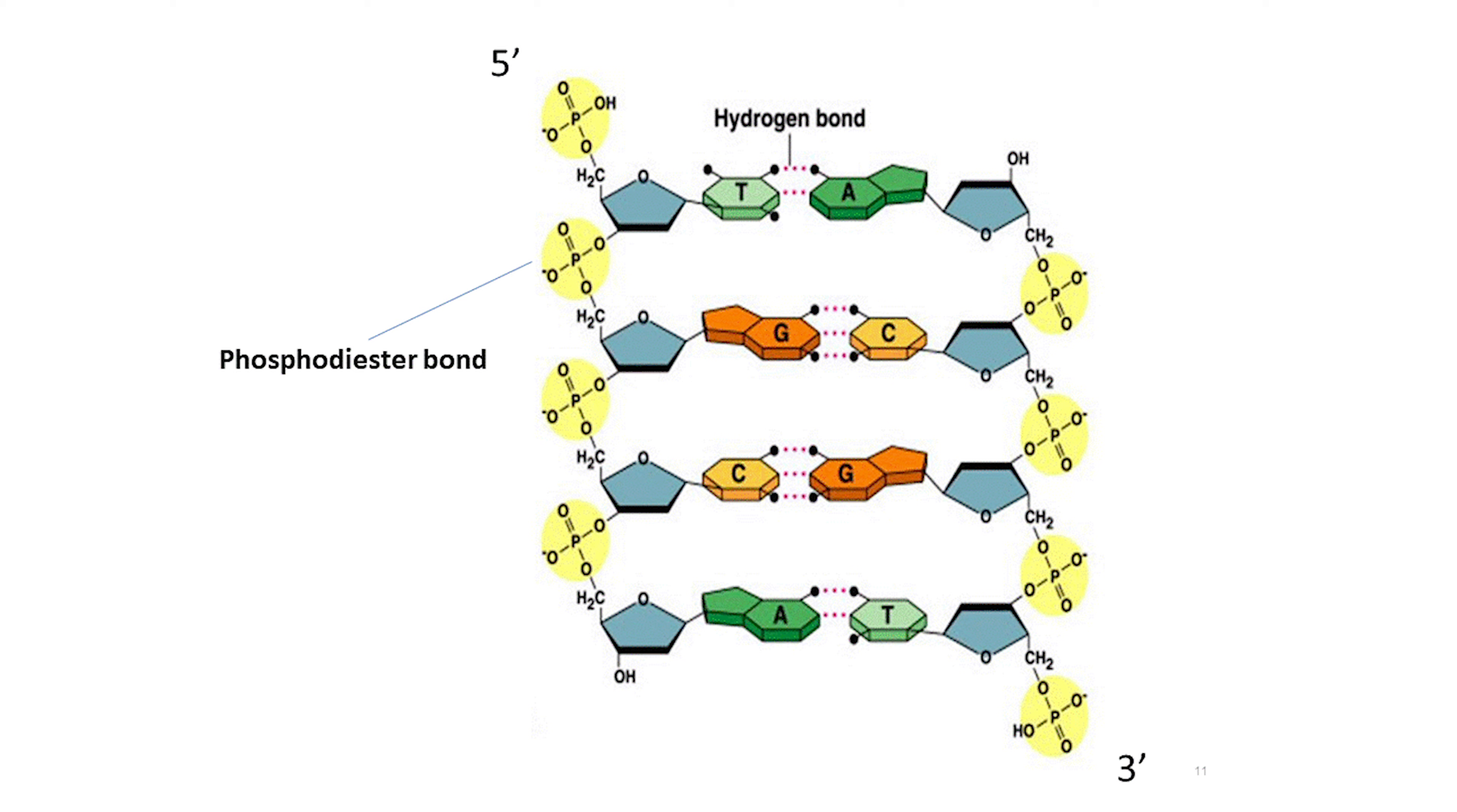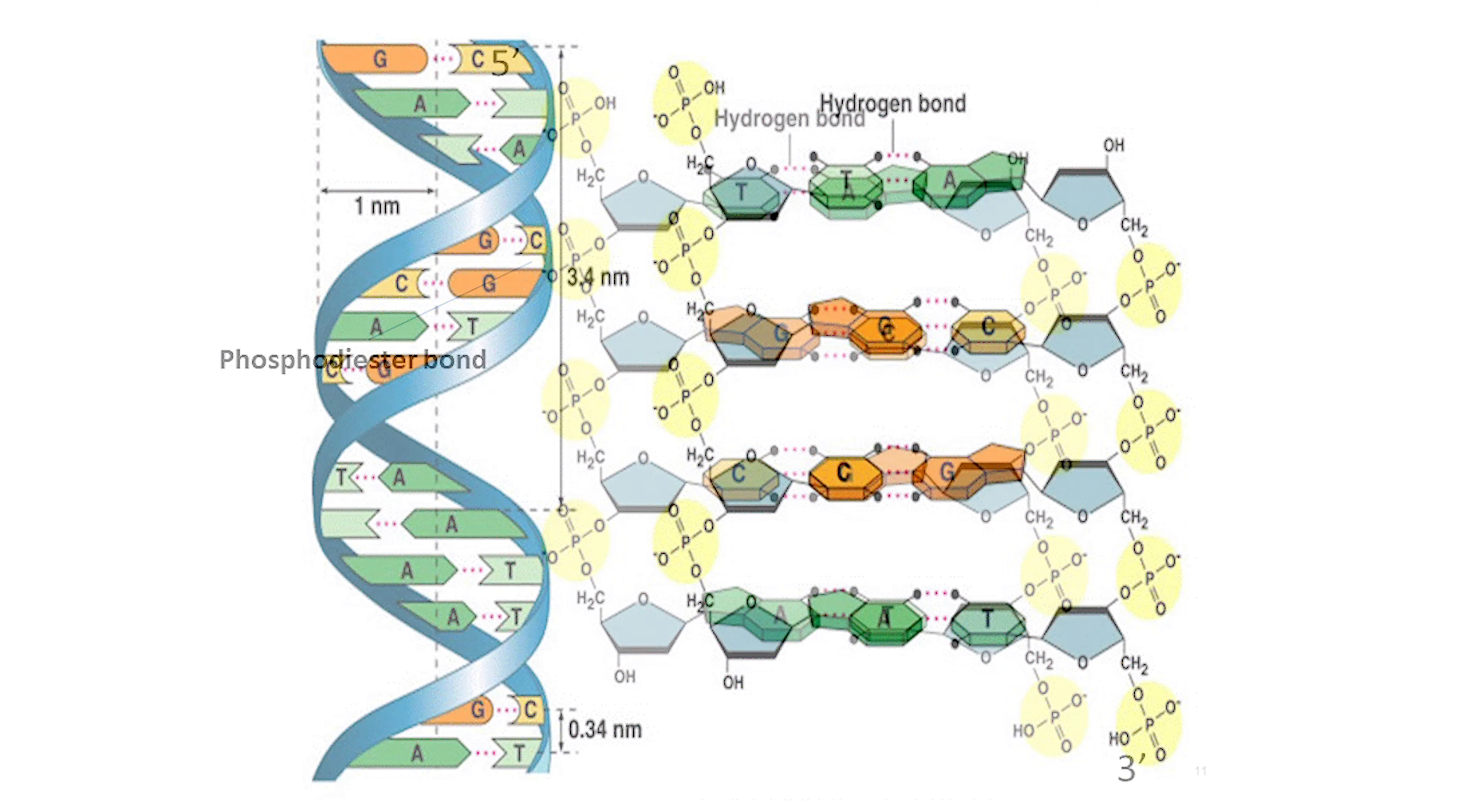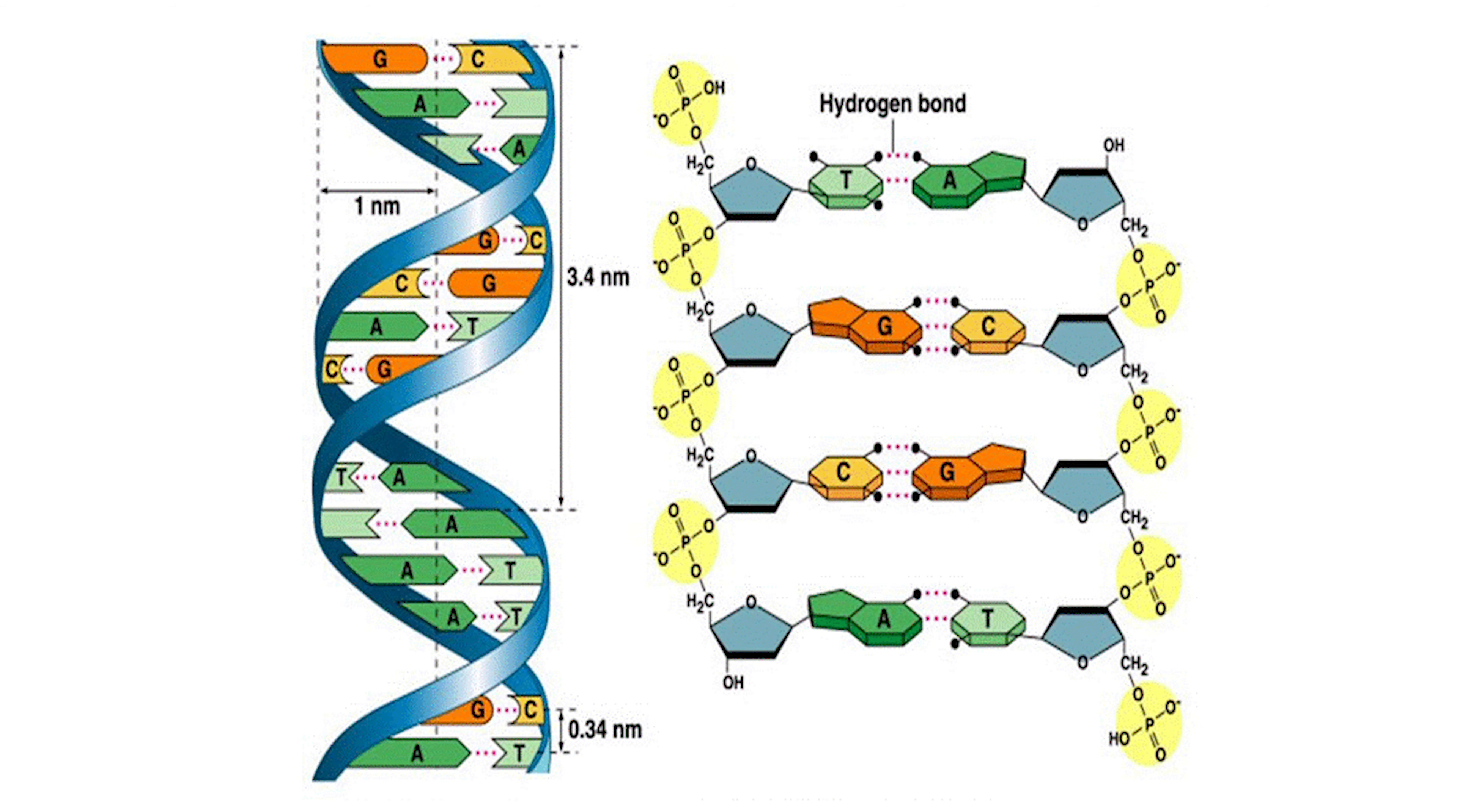Nucleotides are joined with the phosphodiester bonds for making DNA strands. The two DNA strands are held together by the hydrogen bonds between the bases on adjacent strands.